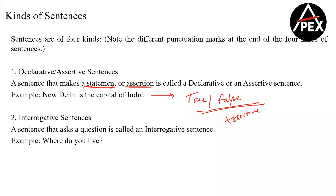If my idea is to question you about something — to ask you a question — then that will be an interrogative sentence. Like 'where do you live?' or 'what's up?' — all of these are interrogative sentences.